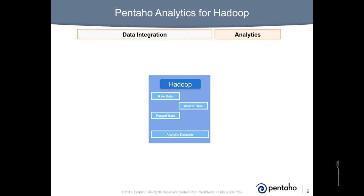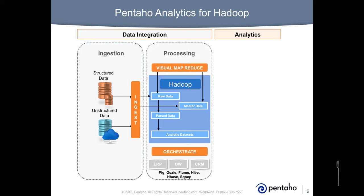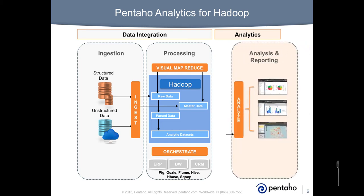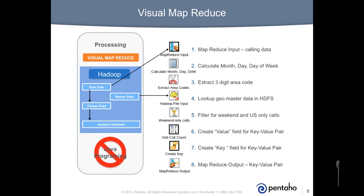Pentaho plays a strategic data integration and analytics role for migrating to Hadoop. Within data integration, you have ingestion of structured and unstructured data into Hadoop, and processing with Visual MapReduce and orchestration capabilities to merge Hadoop with existing data sources and utilities. Within analytics, Pentaho enables self-service analysis and reporting on Hadoop data. Pentaho Visual MapReduce eliminates the need for Java programming. Pentaho's drag-and-drop ETL design environment is used to visually create a transformation that is run as a native MapReduce application distributed across the Hadoop cluster.